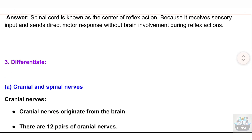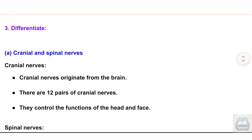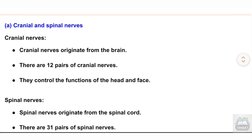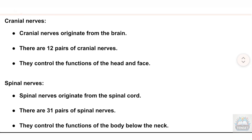Question 3, Differentiate. (a) Cranial and spinal nerves. Cranial nerves originate from the brain; there are 12 pairs of cranial nerves and they control the functions of the head and face. Spinal nerves originate from the spinal cord; there are 31 pairs of spinal nerves and they control the functions of the body below the neck.